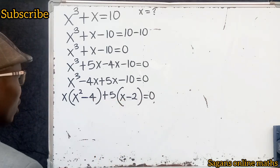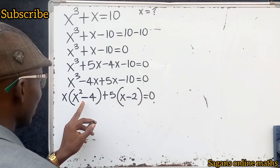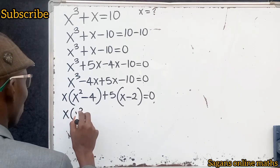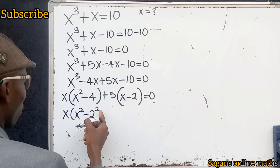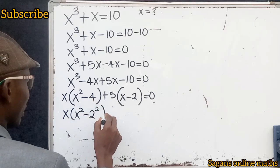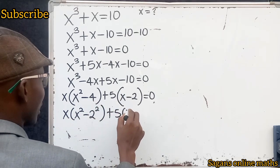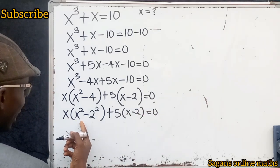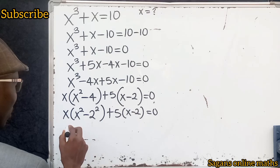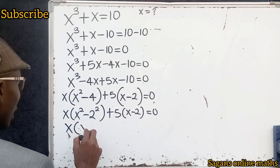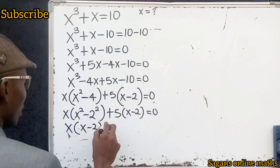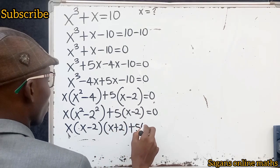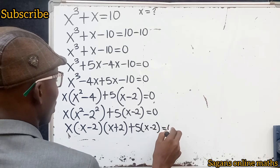Now consider that x squared minus 4 is a difference of two squares. So this becomes x into x squared minus 2 squared — and 2 squared is 4 — plus 5 into x minus 2, all equals 0. By the definition of difference of two squares, this is x into x minus 2 into x plus 2, plus 5 into x minus 2, equals 0.